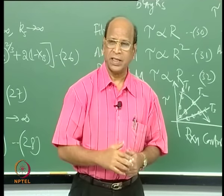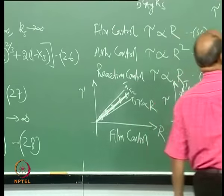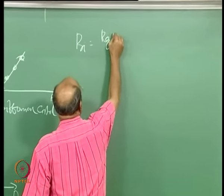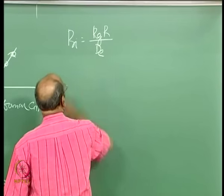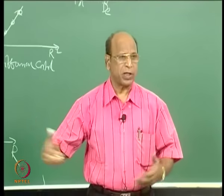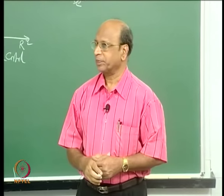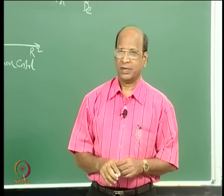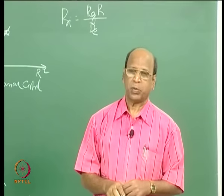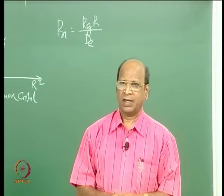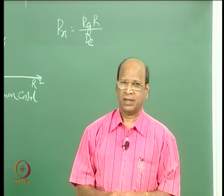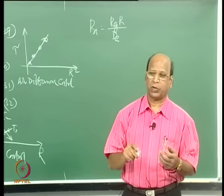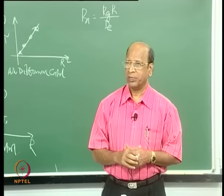This can be justified quantitatively using the Biot number: Biot number = K_G * R / D_E. If this number is very large — say 1000 or 2000 — then the film resistance is negligible compared to ash diffusion resistance, and we can happily ignore the film control.